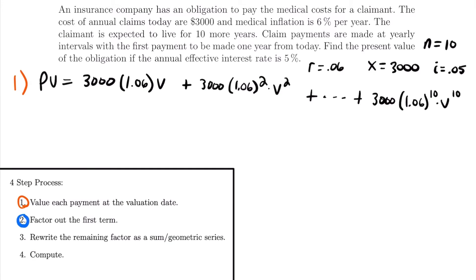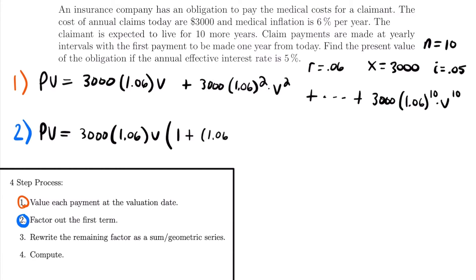Now we move into step two: factor out the first term from each term in the series. We factor out 3,000 times 1.06 times the present value factor. For step two, the present value equals 3,000 times 1.06 times V, multiplied by the quantity: 1 plus 1.06 times V, and continuing all the way up to 1.06 to the power of 9 times V to the power of 9. We've pulled 3,000 and one quantity each of 1.06 and V out of every term.